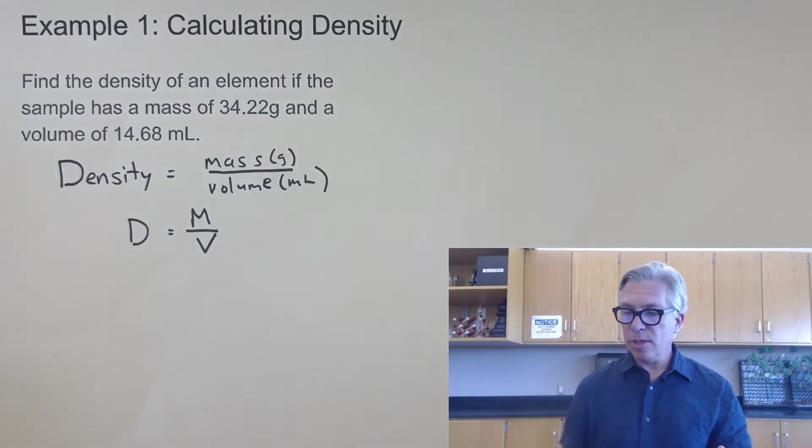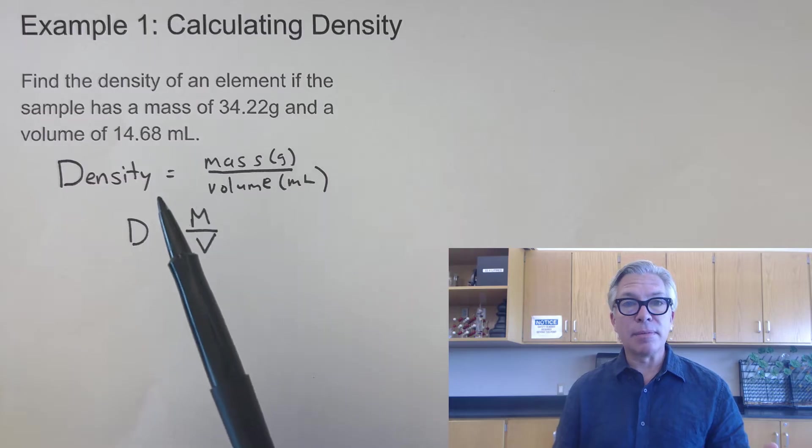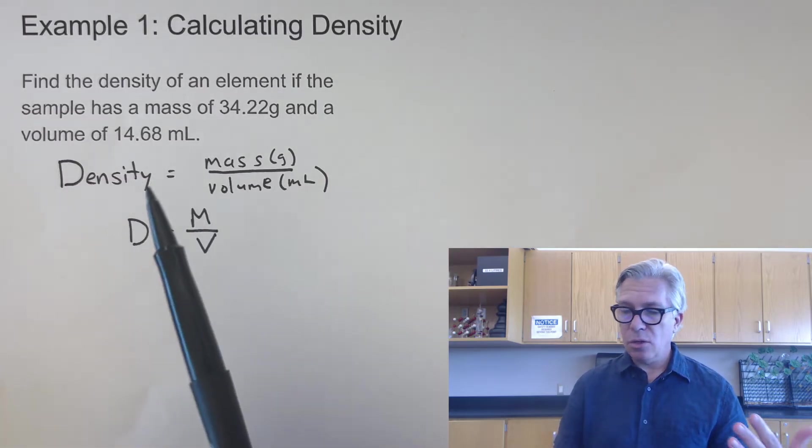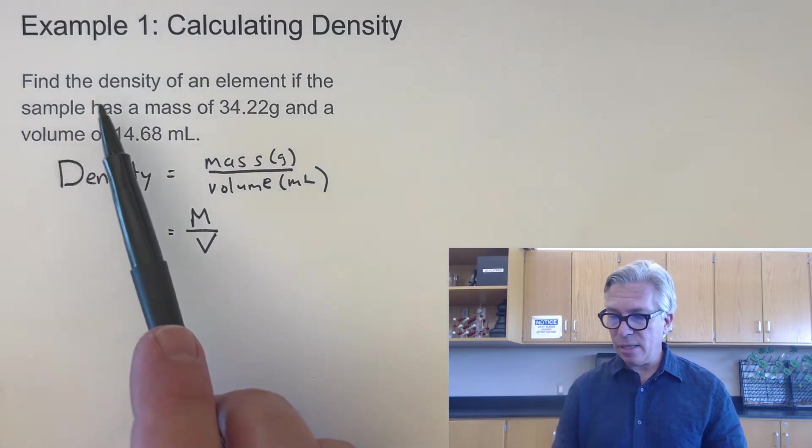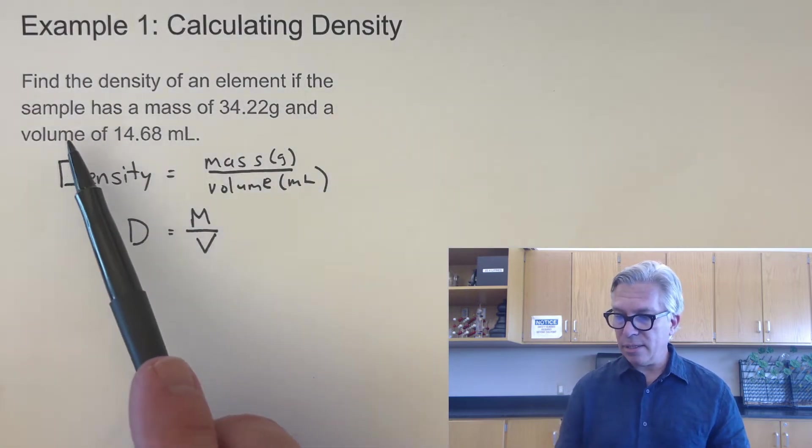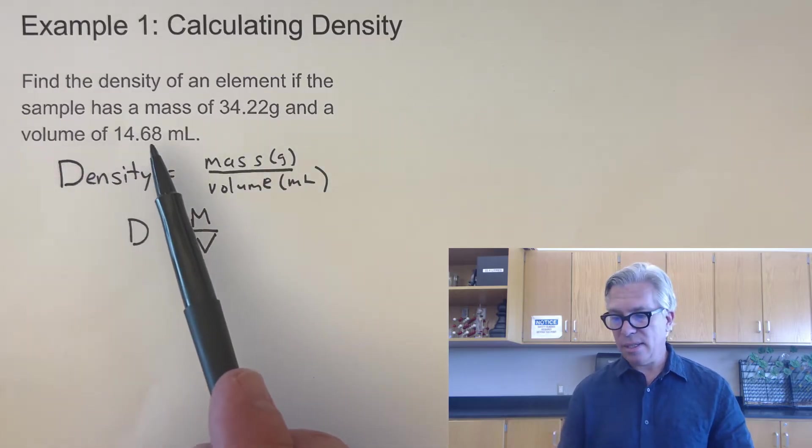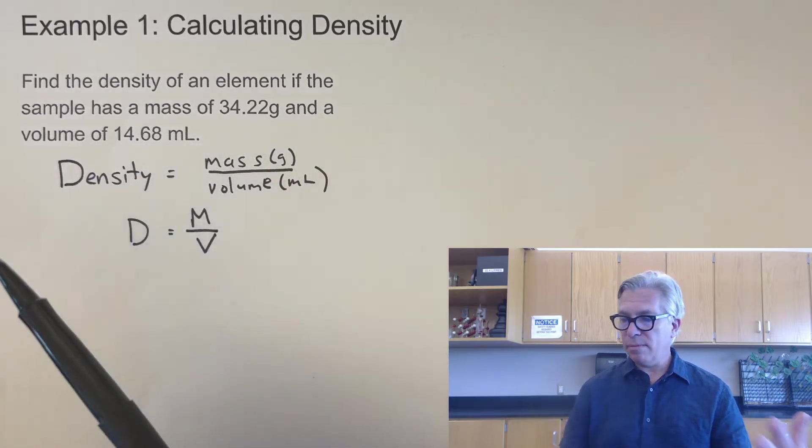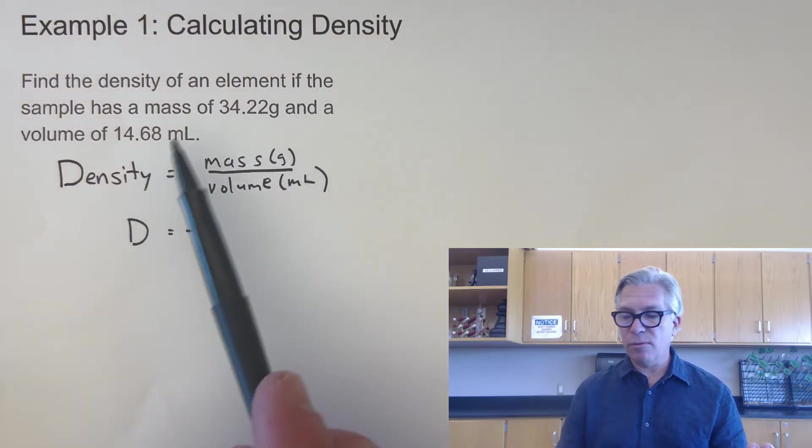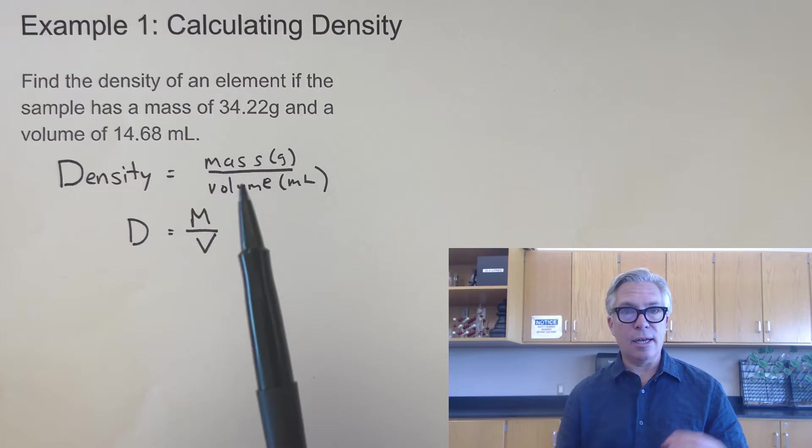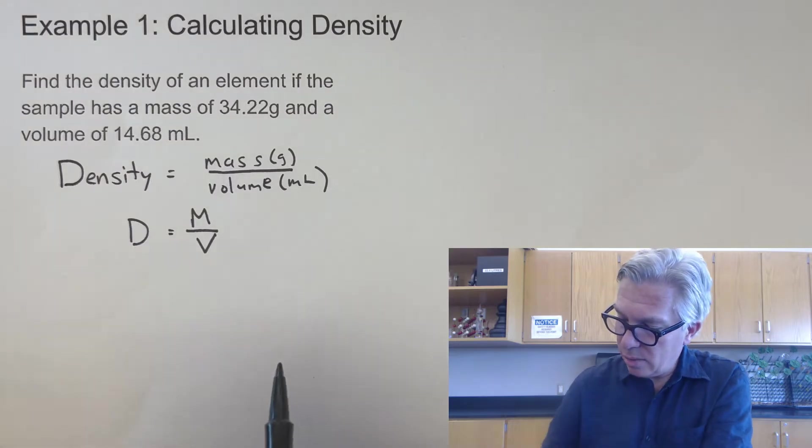As you're doing your chemistry homework, you might run into a word problem something like this. Chemistry is full of word problems, and we just have to deal with it. So the question is, find the density of an element if the sample has a mass of 34.22 grams and a volume of 14.68 milliliters. So when you're doing problems like this, it's always good to take inventory of what you have. We have a mass, we have a volume, so we can go ahead and plug them in to our density equation.